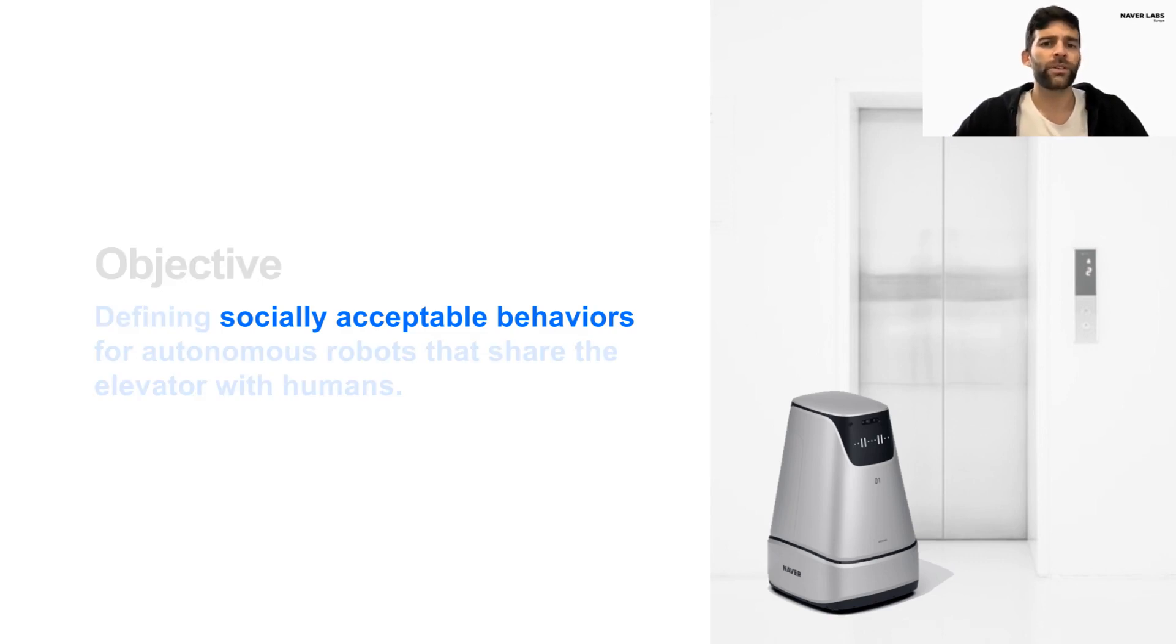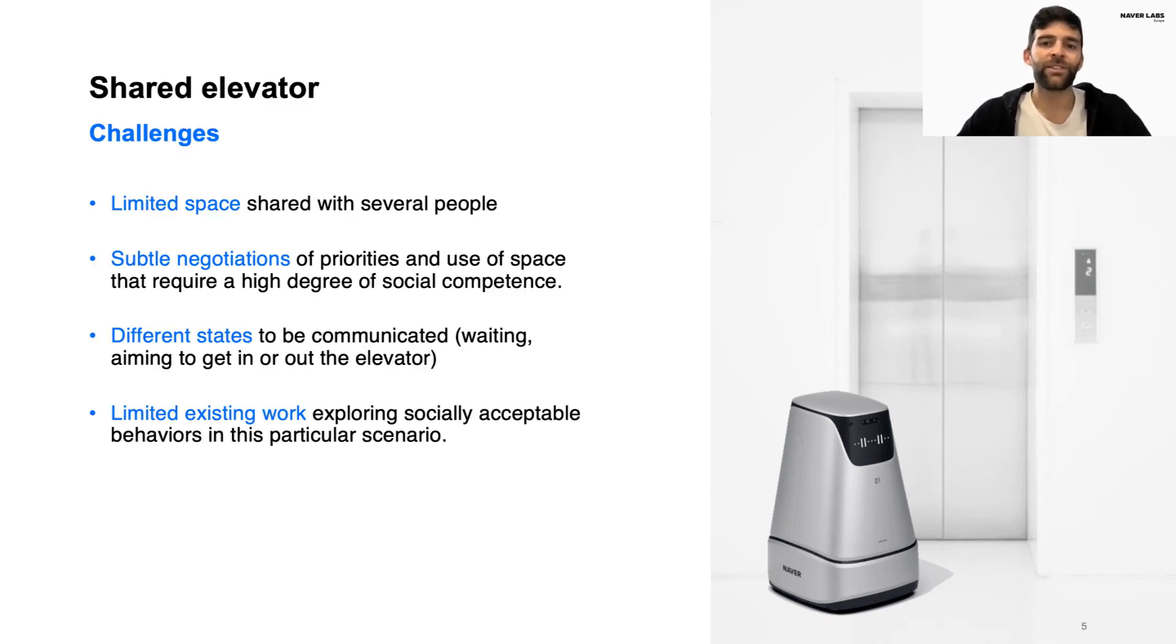The first question that arose was what are socially acceptable behaviors for robots in a scenario like this? Indeed, it is a particularly interesting question in this context as this scenario includes the sharing of limited spaces with humans, subtle negotiations of space and priority that require a high level of social competence, and a scenario in which we can find a range of different states that the robot needs to communicate. Finally, we have seen limited work exploring social acceptability in this context.